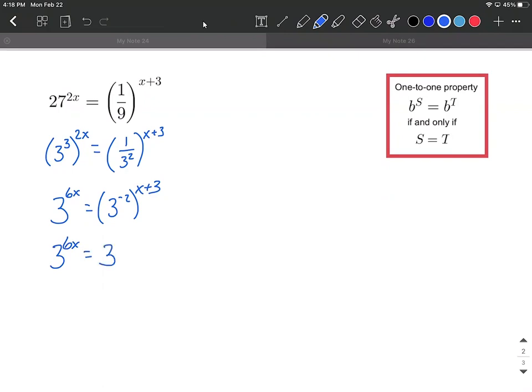When you do so, you have to distribute. That negative two needs to be multiplied by each of those terms in the outer exponent. So negative two times x makes negative 2x, and negative two times positive three makes negative six.